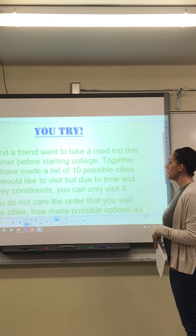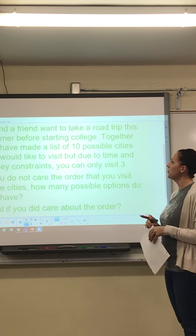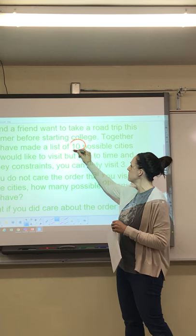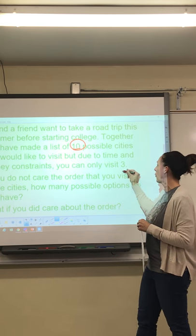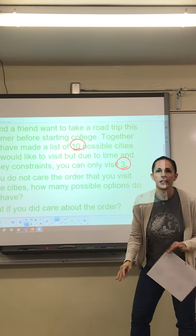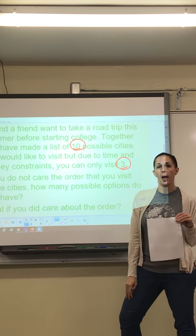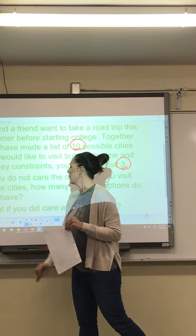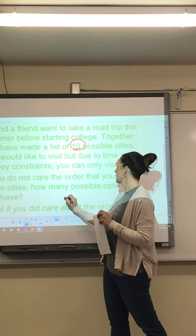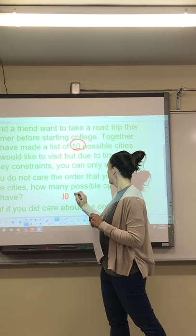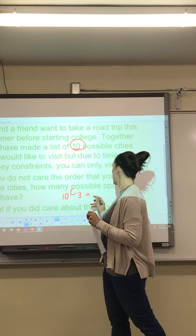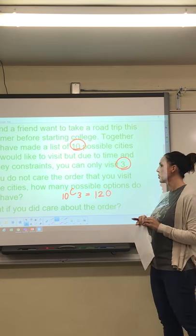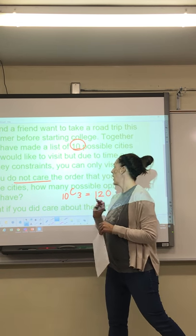The next example we're going to talk about is you and a friend want to take a road trip this summer before starting college. Together, you have made a list of 10 possible cities you would like to visit, but due to time and money constraints, you can only visit 3. If you do not care about the order you visit these cities, how many possible options could you have? Well, if you don't care about the order, then you're using combinations. So you would type in your calculator 10, go to the probability button and find nCr, 3. In this case, I got 120 possible options when you do not care about the order.